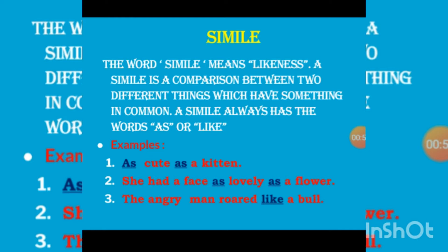Here are some examples. First: 'as cute as a kitten' — you can see the word 'as' is used, comparing the cuteness of a child to a kitten. That 'as' makes it a simile. Second example: 'She had a face as lovely as a flower' — here the face is compared to a flower using the word 'as.'